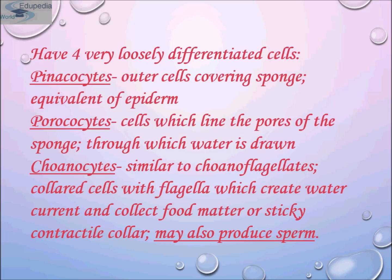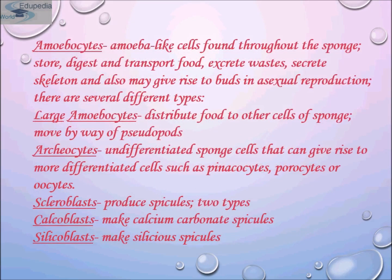Amoebocytes are amoeba-like cells found throughout the sponge. They store, digest, and transport food, excrete wastes, secrete the skeleton, and may give rise to buds in asexual reproduction. Large amoebocytes distribute food to other cells and move by way of pseudopods, also known as false feet. Archeocytes are undifferentiated stem cells that can give rise to more differentiated cells such as pinacocytes, porocytes, or oocytes.